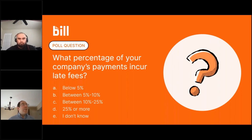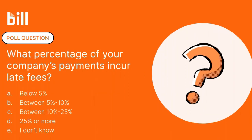What we want to do now is pose our second of four polling questions. I talked about delays that can result if one does not have a timely process or does not have visibility of the status of payments, or does not know if invoices have even arrived — all risks that contribute to late payments. We want to find out what percentage of your company's payments typically incur late fees. The choices are below 5%, between 5–10%, between 10–25%, 25% or more, or I don't know. I'm looking forward to giving you the opportunity to see automation in action and, in particular, Bill's approach to applying automation to accounts payable processes.